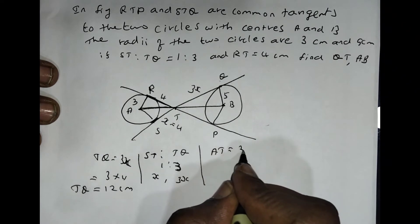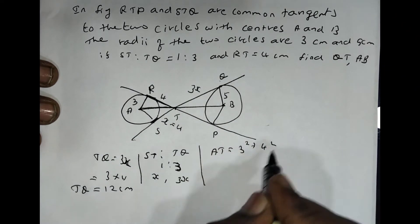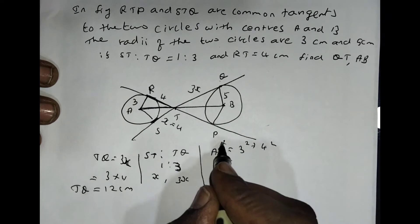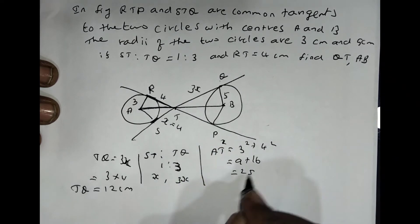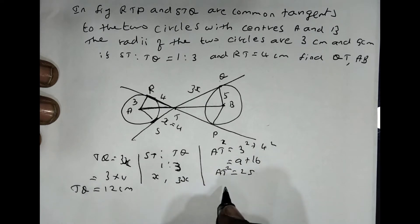So AD squared equals 3 squared plus 4 squared. So it becomes 9 plus 16, which is 25. AD squared equals 25, then AD equals 5.